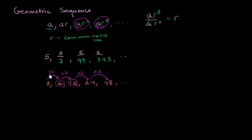And any non-zero value can be our common ratio. It can even be a negative value. So for example, you could have a geometric sequence that looks like this. Maybe you start at 1.